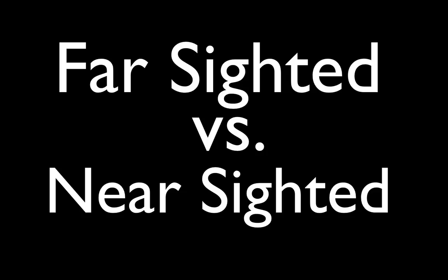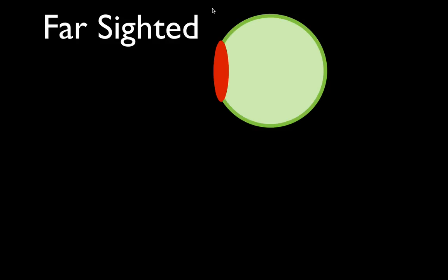In today's video I'm going to go over the difference between farsightedness and nearsightedness. I like to start with farsightedness. This is your eye — this is the lens in your eye. The lens in your eye is a convex lens.